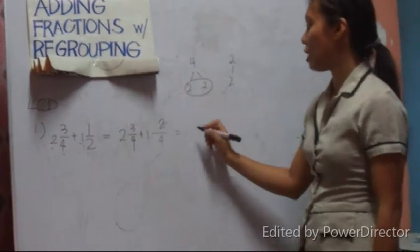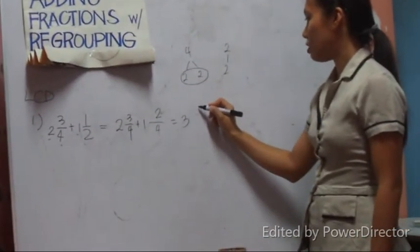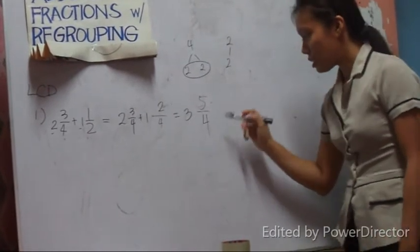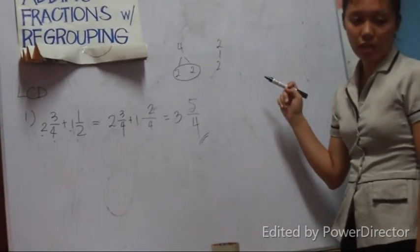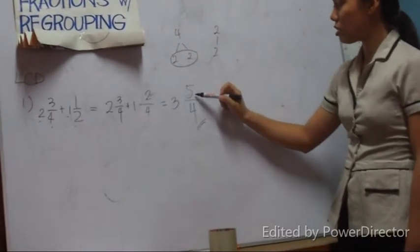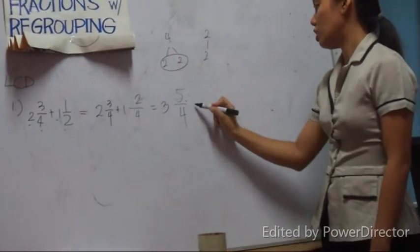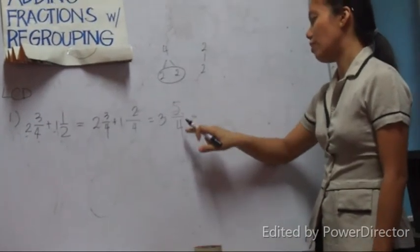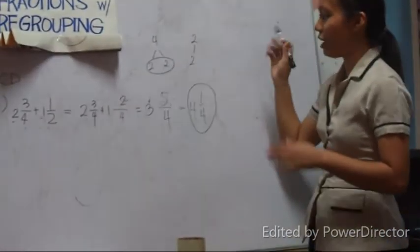So now we go back to our previous lesson, which has the same denominator. This becomes easy now: 3 and 5 over 4. Is this the simplified form already? Not yet, because the numerator is still larger. So we need to convert this: 5 divided by 4. Perfect.